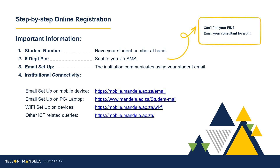In successfully registering, please note the following. Ensure you have your student number and five-digit PIN at hand. The five-digit PIN should have been received by the qualifying student via SMS. The institution's primary medium of communication is email. To ensure your digital connectivity is set up, please make use of the provided links to set up your institutional email on your devices.